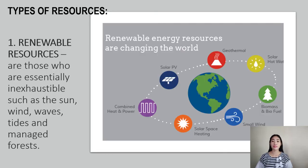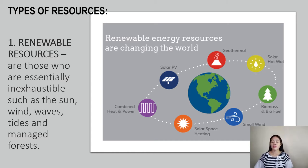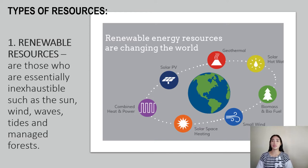Let's move on to the types of resources. First is renewable resources — those that are essentially inexhaustible, such as the sun, wind, waves, tides, and managed forests. The first renewable resource is solar energy. It is sunlight, one of the planet's most abundant and freely available energy resources. The amount of solar energy that reaches the Earth's surface in an hour is more than the planet's total energy requirements for a full year.